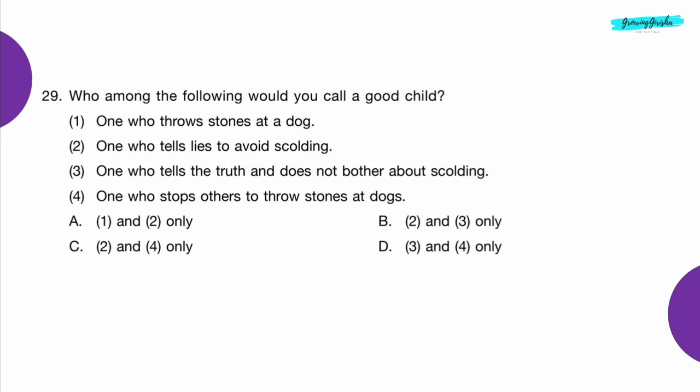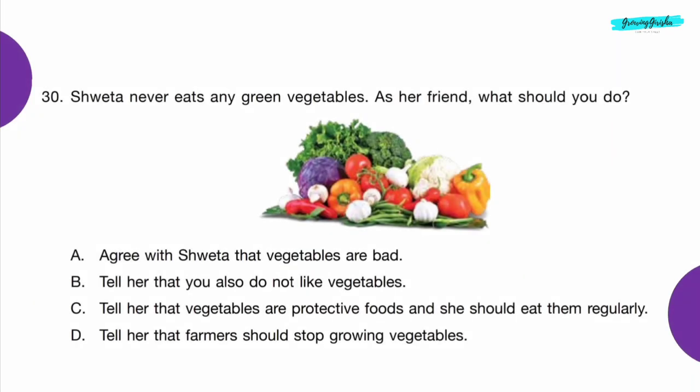Question 29: Who among the following would you call a good child? Option D — 3 and 4 only.